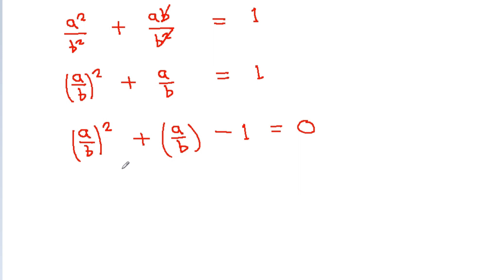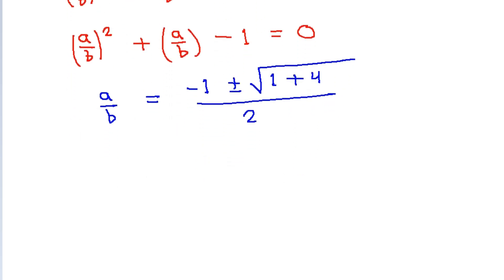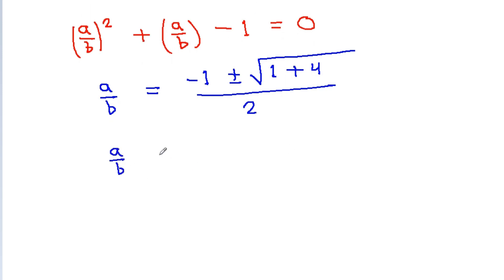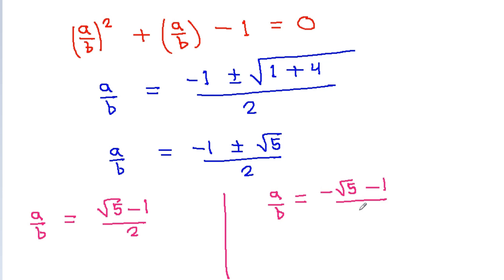This is a quadratic equation in (a/b). Applying the quadratic formula, a/b = (-1 ± √(1 + 4)) / 2 = (-1 ± √5) / 2. So we get two roots: a/b = (√5 - 1)/2 and a/b = (-√5 - 1)/2.